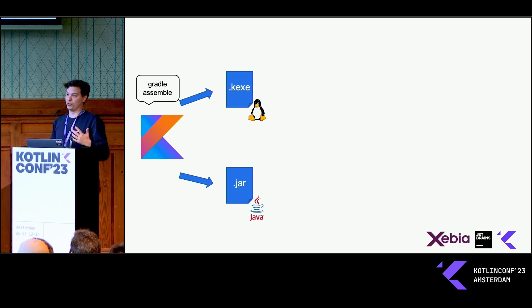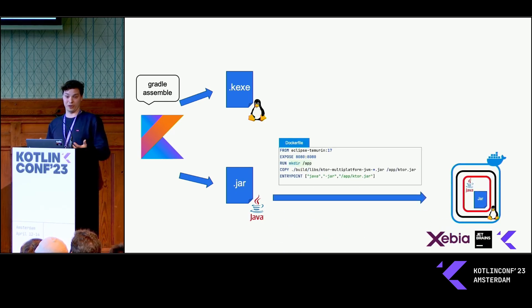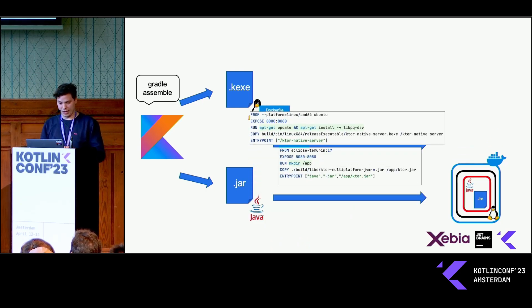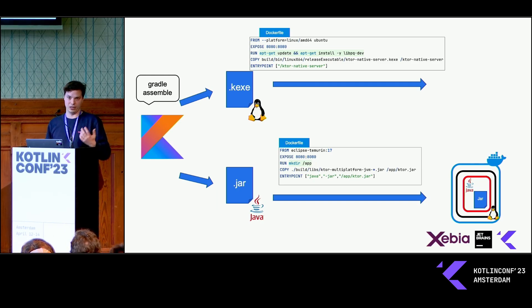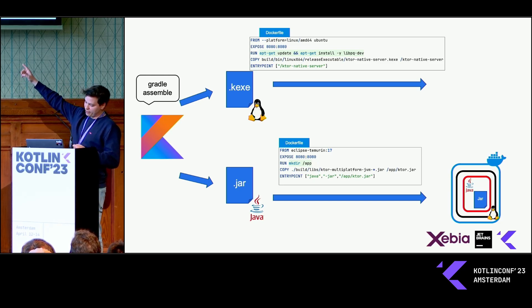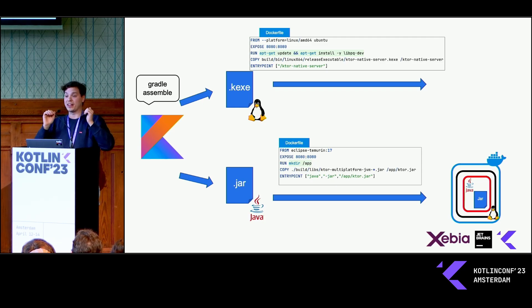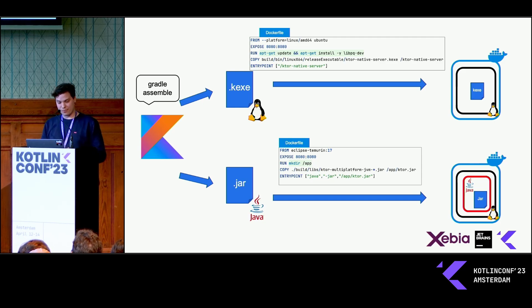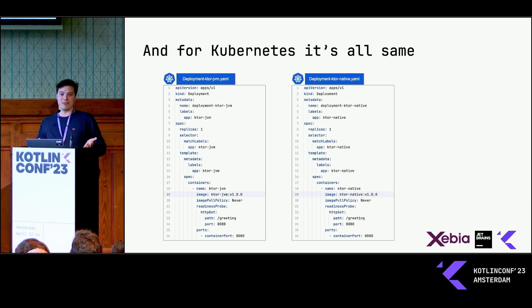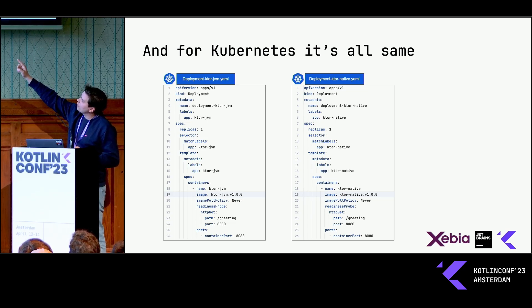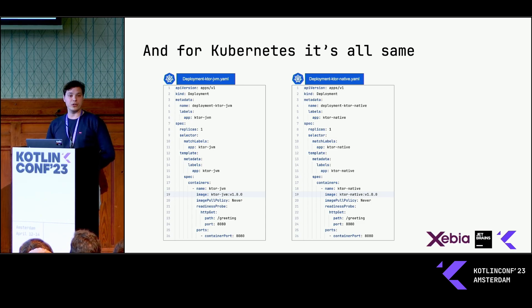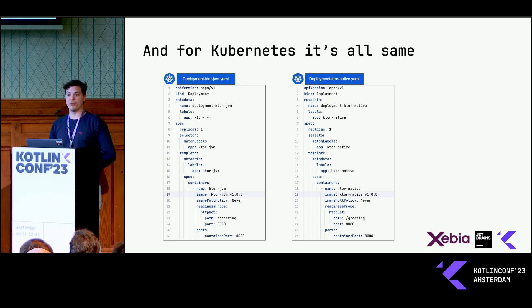Once you have these files, you only have to write a Dockerfile — in one case with a JVM in there, and in the other case with just Ubuntu or any Linux distribution. You do need the libpq-dev package for Postgres, and then the rest is just putting in the KXI file, and you have your container. For Kubernetes, it's pretty much the same — you can have your deployment. The real actual difference you see is the image that you target.